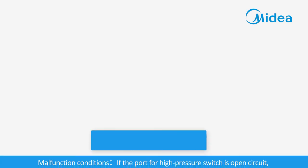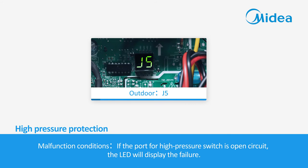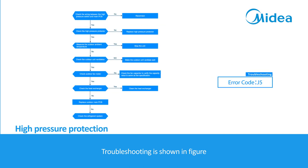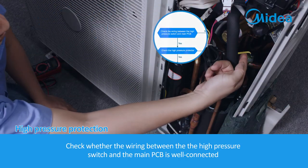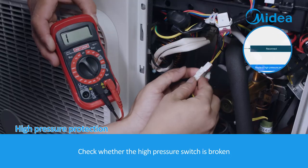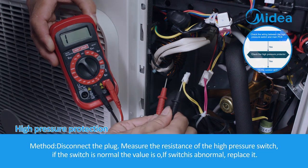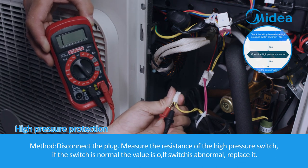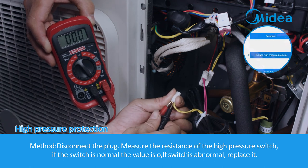High pressure protection. Malfunction conditions: if the port for the high pressure switch is open circuit, the LED will display the failure. The failure may be caused by wiring mistake, faulty high pressure switch, faulty outdoor fan assembly (AC motor only), system leakage or blocking, or faulty outdoor PCB. Troubleshooting: check whether the wiring between the high pressure switch and the main PCB is well connected. Check whether the high pressure switch is broken: disconnect the plug and measure its resistance. If normal, the value is zero; if abnormal, replace it.